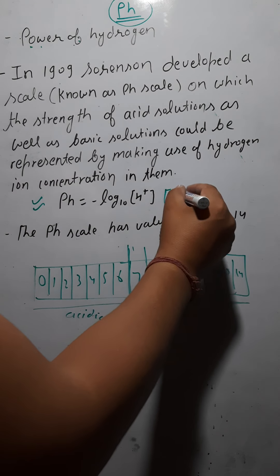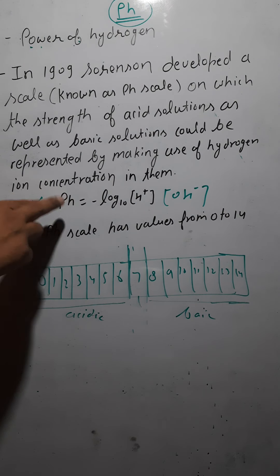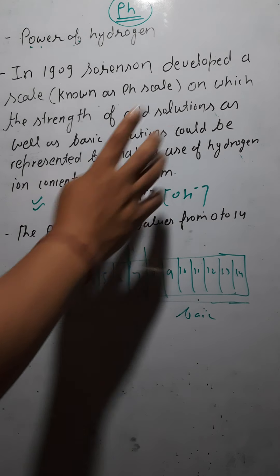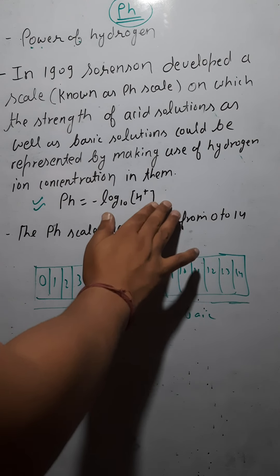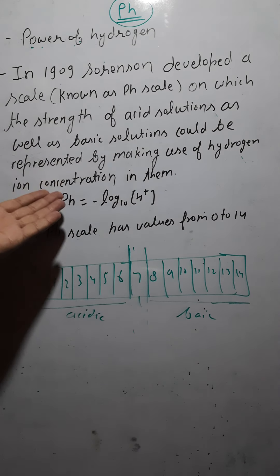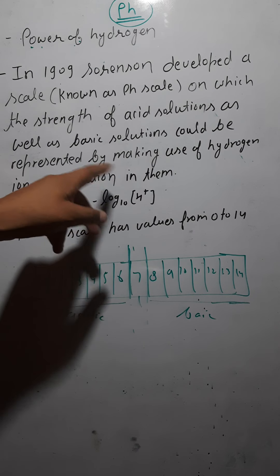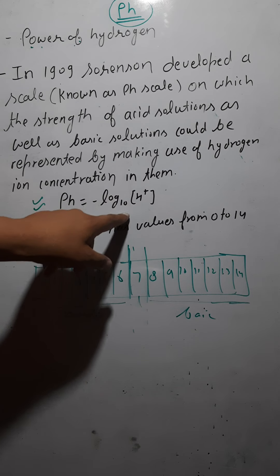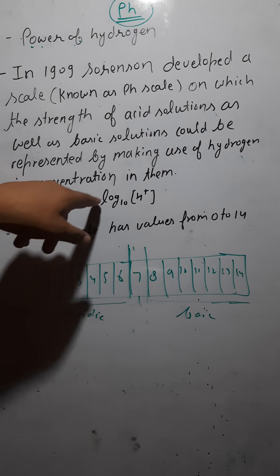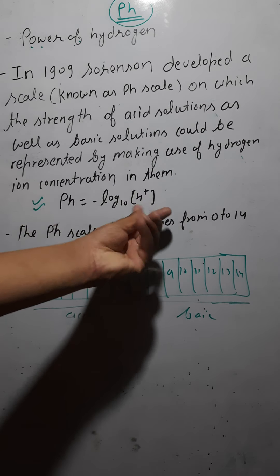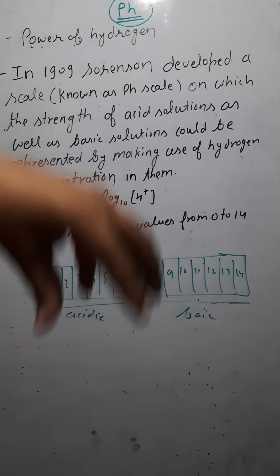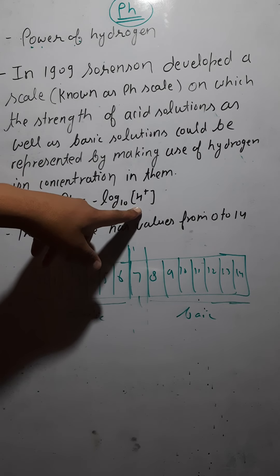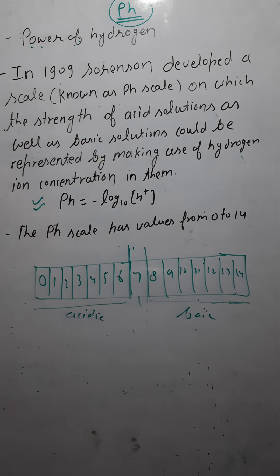You can also use OH⁻ ion concentration to find pH. The pH depends on the concentration of H⁺ ions. As many hydrogen ions as there are in the solution, the lesser will be the pH value. These two — pH and H⁺ concentration — are inversely proportional.